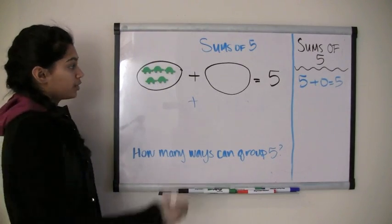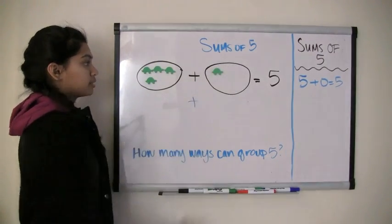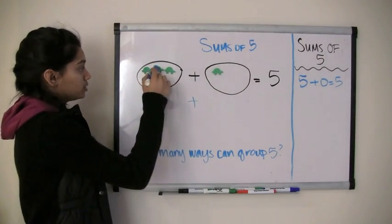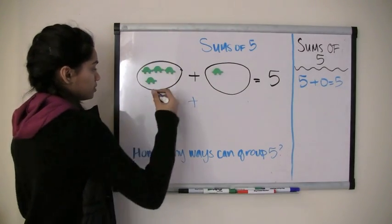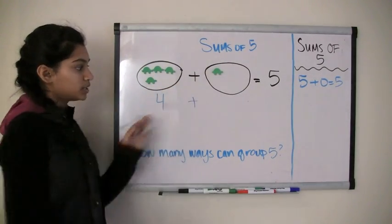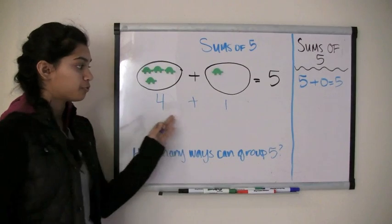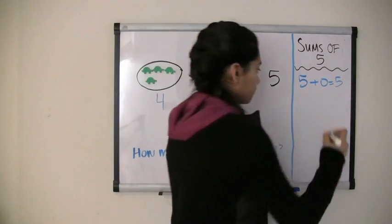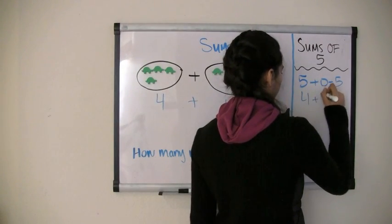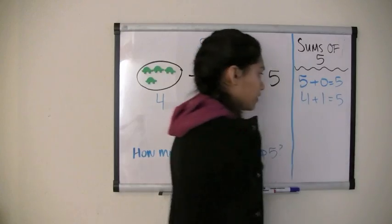So if we move a star over to this area, now we have one, two, three, four turtles plus one turtle. So four plus one equals five. And that's our next sum.